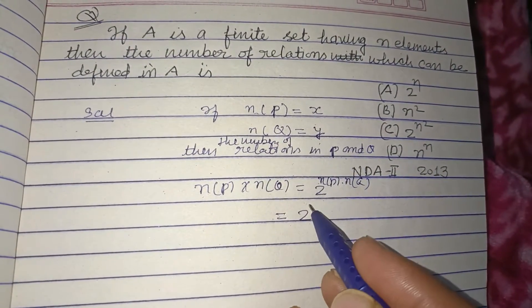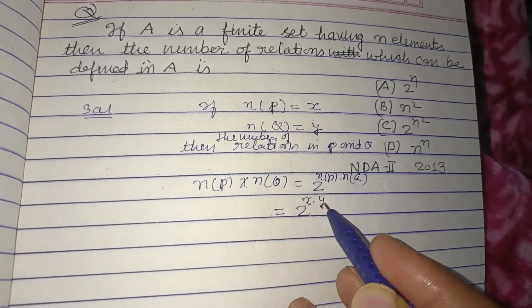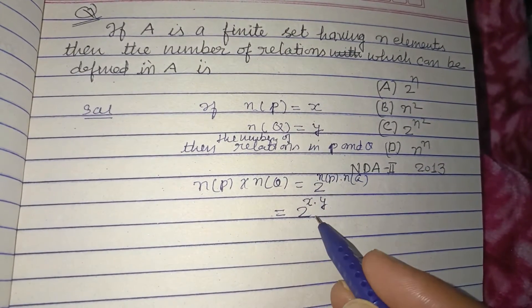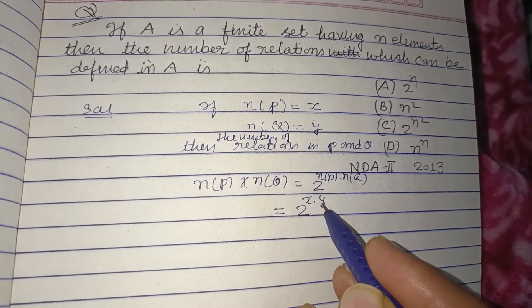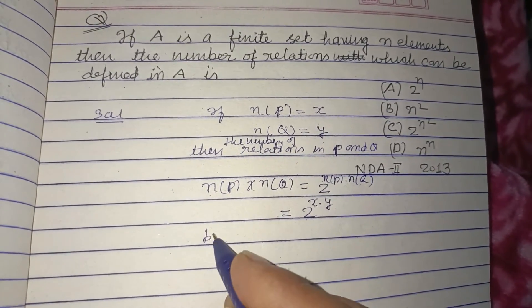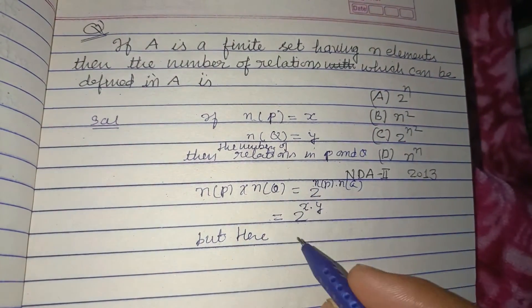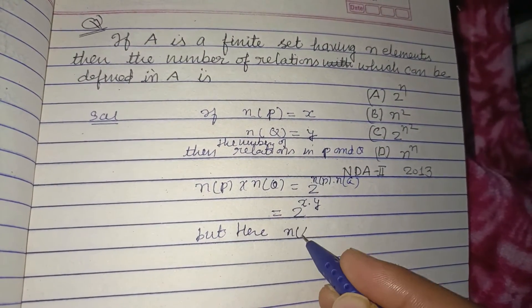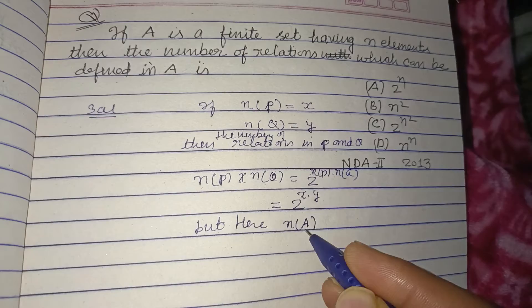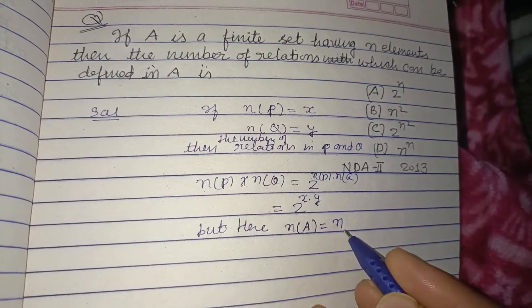This is n(P) is x into n(Q) is y, so this is 2 to the power x into y. Now here it is given that number of elements in set A is n and we want to